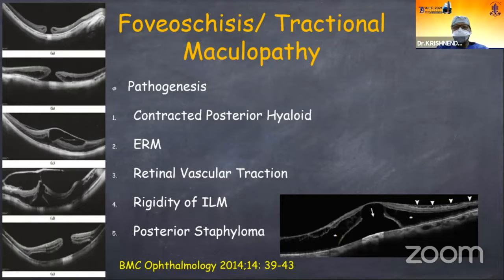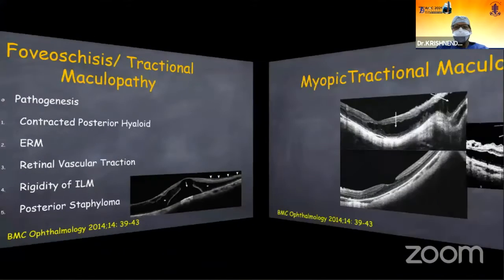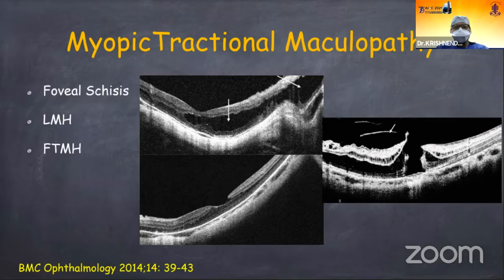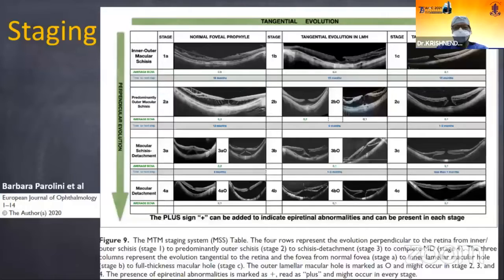The posterior staphyloma gives rise to this kind of problem in myopic patients — big eye with big problem. Myopic traction maculopathy can lead to foveal schisis, lamellar macular hole, full thickness macular hole, subretinal fluid, and lastly retinal detachment.